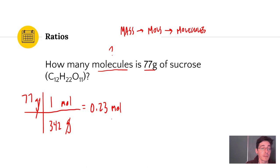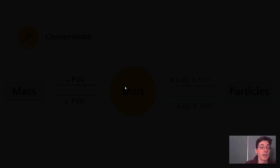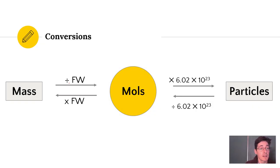This unit, 0.23 moles, is equal to 77 grams. They mean the same thing. We've just used this ratio 1 to 342 to convert from one unit to the other. So I've done this first conversion. I've gone from mass to moles. Here we've taken the mass divided by the formula weight to get to moles.